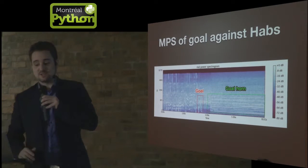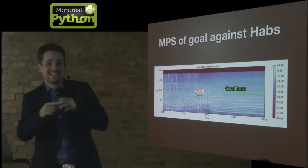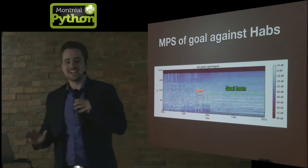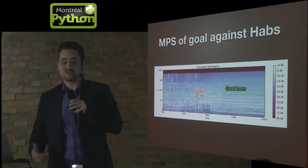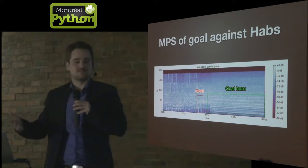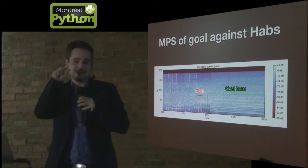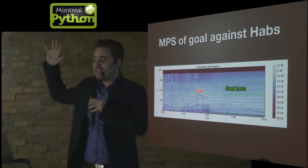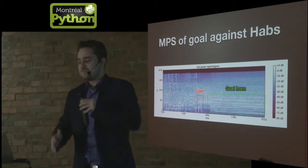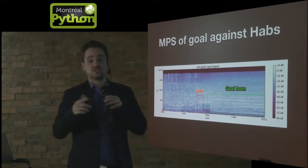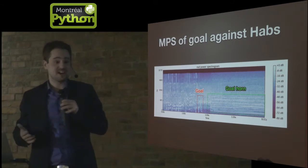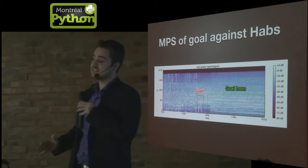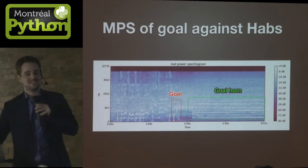Then people often ask: how could you set apart goals for and against the Habs? Well, a goal against — you can see the signal is smaller. I got lucky because I mostly watch games on the Francophone stations, either TVA or RDS. And as you can guess, those stations are a tiny bit biased for the Habs. So when the Habs score, they go nuts! But when the other team scores, they're like, 'okay, let's move on.' So there's a pretty big difference between the two. This is not the case for CBC, which tries to be much more balanced.